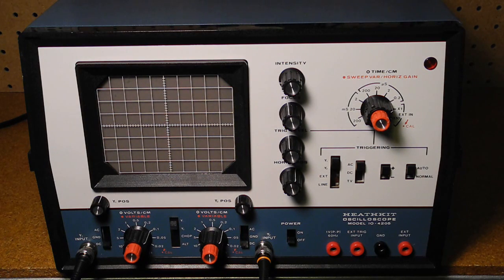It provides channel 1, channel 2, external and line trigger sources with AC, DC or TV trigger modes, plus or minus slope, automatic or normal trigger. The advantage of a dual channel scope is that you can display two waveforms at once. It can also operate in an XY mode where one channel drives the vertical and one the horizontal.